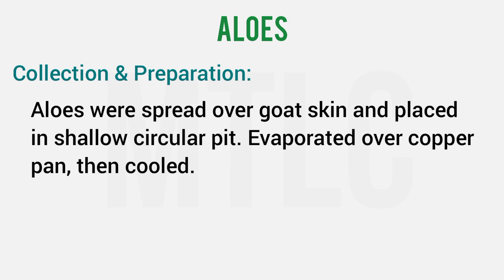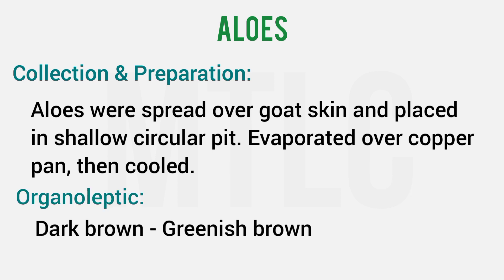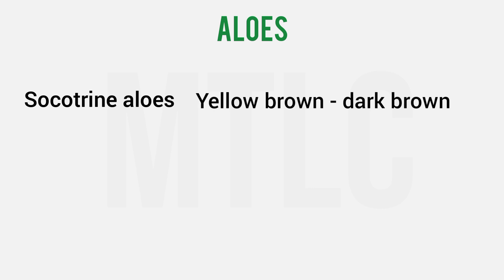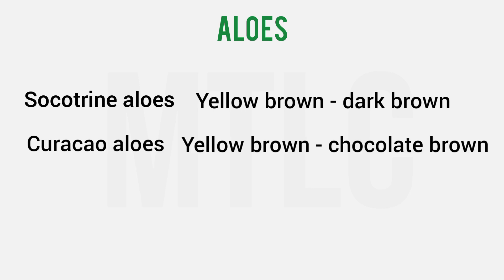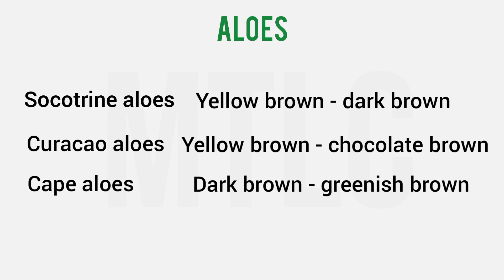For cape aloes, the leaves are cut and a goat skin is used. The juice is spread from the leaves and the leaves appear shiny. The color of cape aloes is dark brown to greenish brown. In summary: socotrine aloes is yellow-brown to dark brown; curacao aloes is yellow-brown to chocolate brown; cape aloes is dark brown to greenish brown.